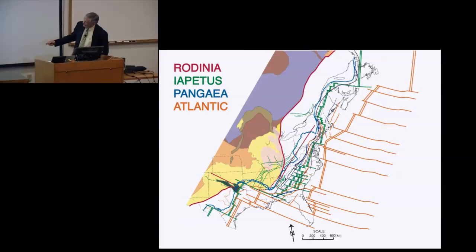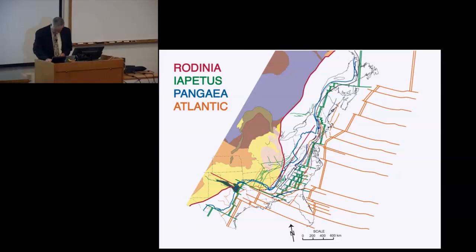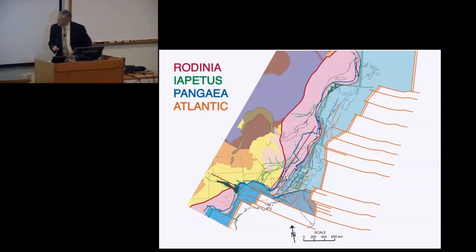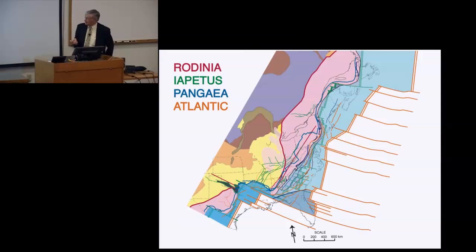The Appalachian-Ouachita system wraps around all the offsets of the Iapetan margin, suggesting what was compressed against Laurentia accommodated to the shape of the pre-existing continental margin. The Bahamas transform coincides with the Iapetan Alabama-Oklahoma transform — another example of tectonic inheritance. In total, what we can see in eastern North America is a record over the past 1.2 billion years of the assembly and breakup of a succession of two supercontinents. Thank you.